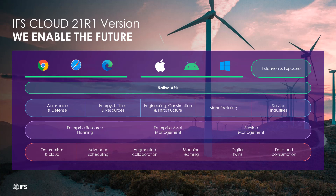21R1 version allows you to have a new user interface for the users out there, and we run on many different platforms. You can run on Chrome, on Edge, on all the modern browsers. You can run it on your iOS, your Android devices, your Windows devices. It's the same IFS applications, the same business logic, the same functionality — whether you're running on a desktop PC or on your tablet or phone. It dynamically resizes itself for the device you're on.